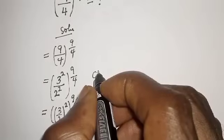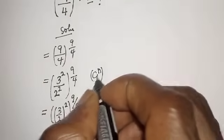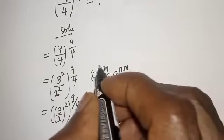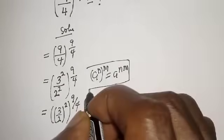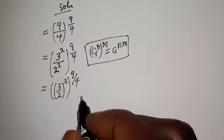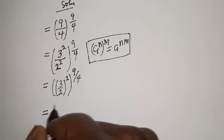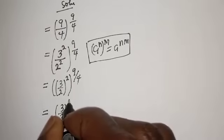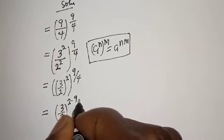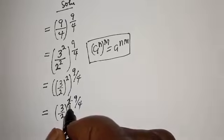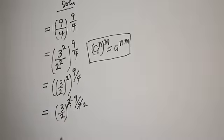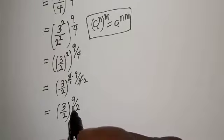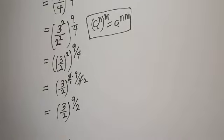Take note of this exponential rule: if you have a raised to power n, to the power of m, that equals a raised to power n times m. So (3/2)² raised to the power of 9/4 becomes (3/2) to the power of 2 multiplied by 9/4, which equals (3/2) to the power of 9/2.